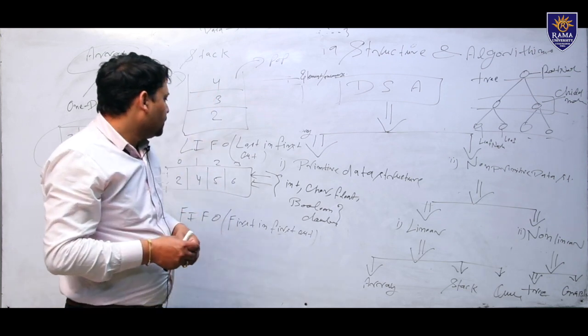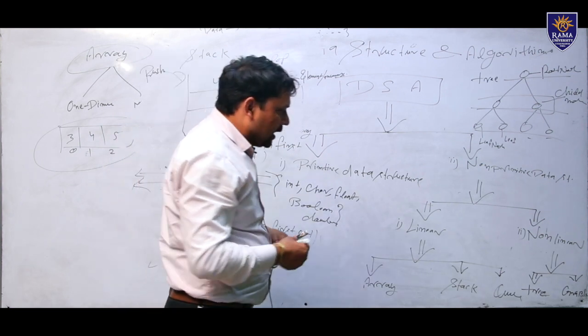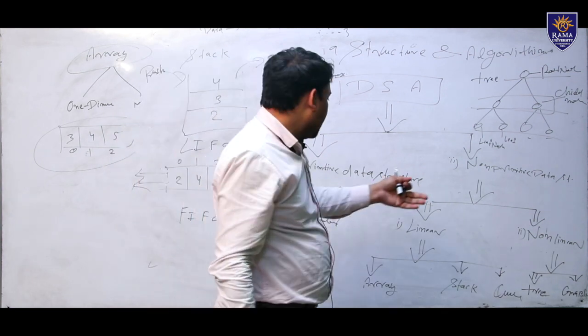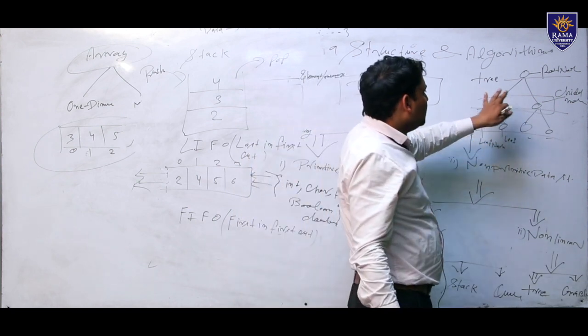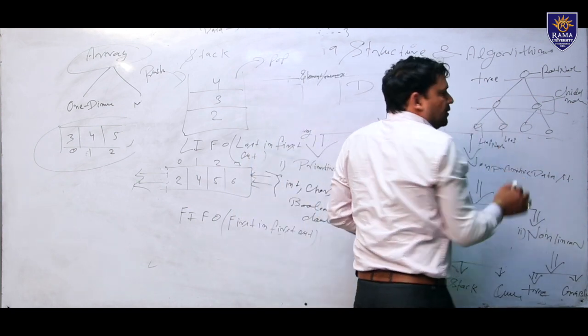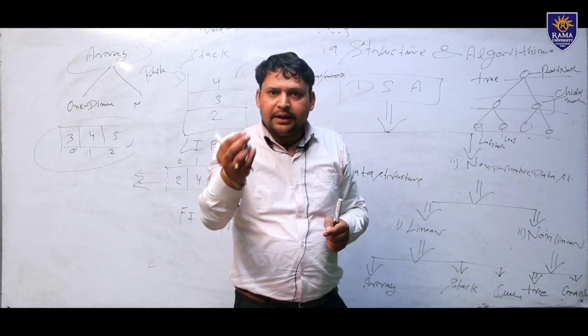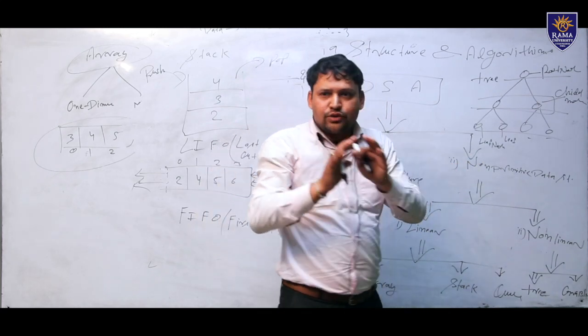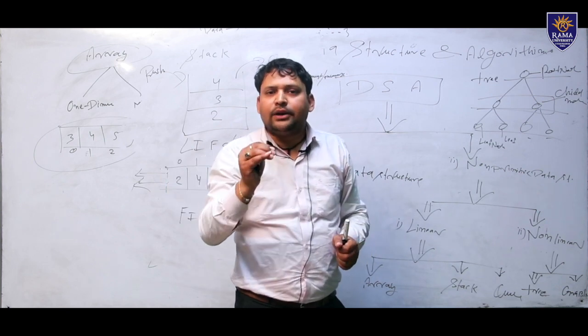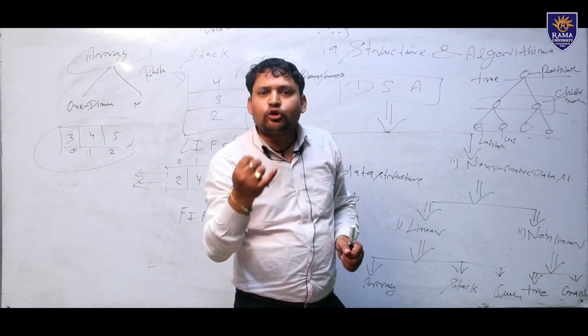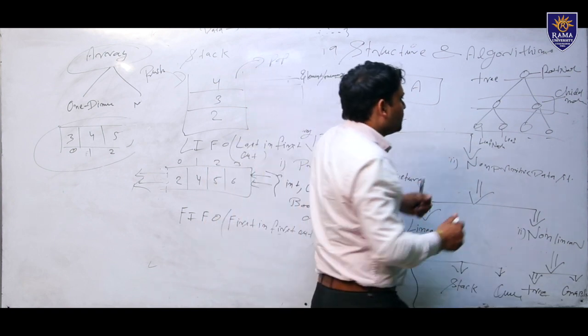Stack has push and pop. Finally, graph. Graphs are basically circular motion. One difference between tree and graph: trees are not joined in circular motion, but graphs are joined in circular motion or create closed figures.